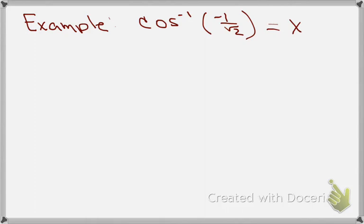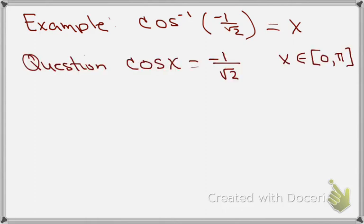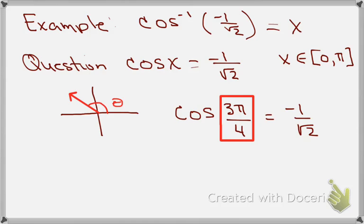Let's look at an example. Suppose we wanted to find cosine inverse of minus 1 over the square root of 2, which equals some angle x. The question is: cosine of x equals minus 1 over the square root of 2. Because we are dealing with cosine inverse, the angle must be between 0 and pi. The cosine is negative in the second quadrant, so we need the second-quadrant angle whose cosine is minus 1 over root 2. From the unit circle, that is 3 pi over 4.